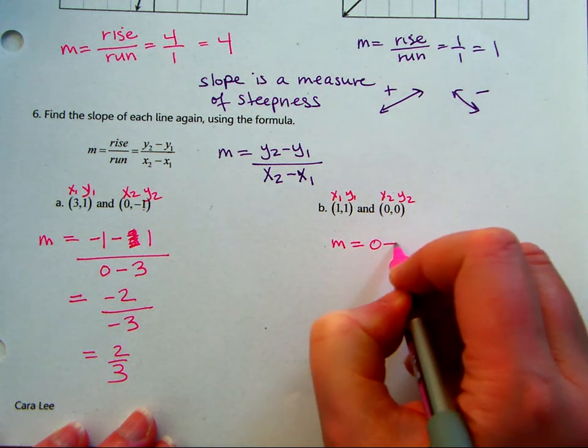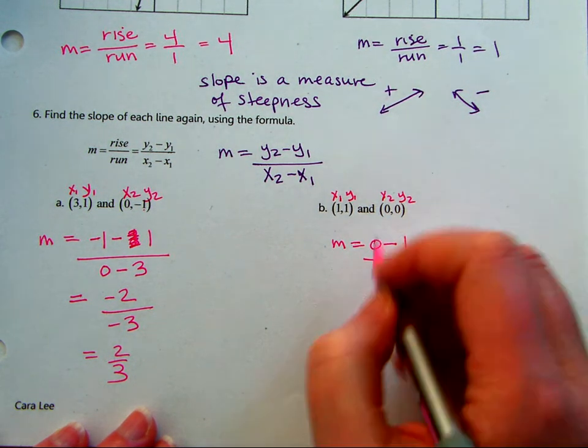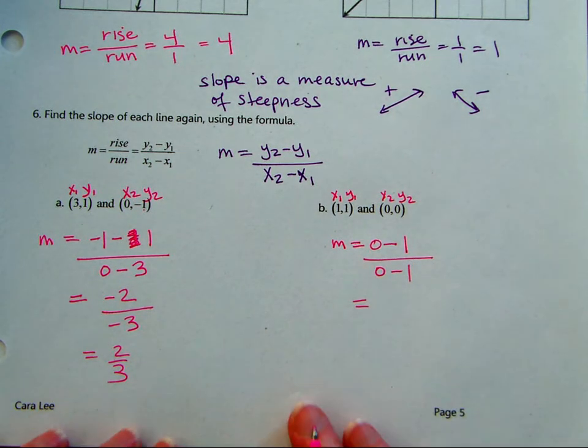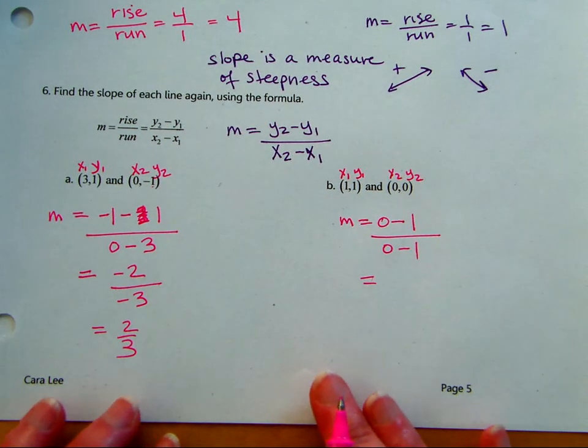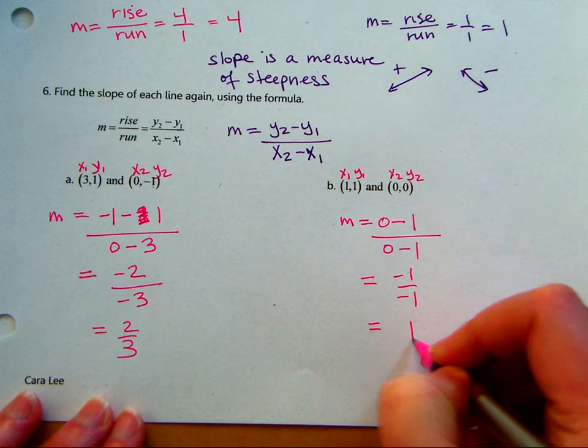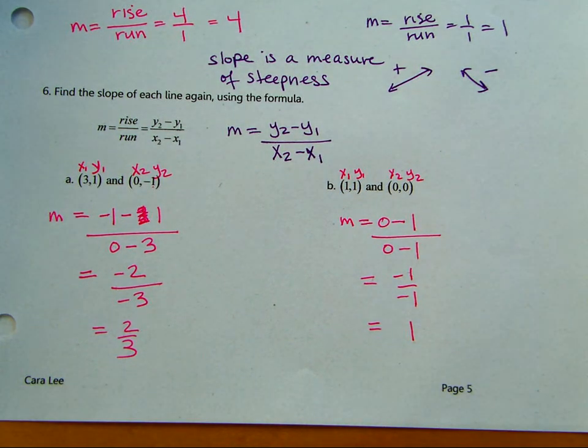So 0 minus 1 over 0 minus 1, which equals negative 1 over negative 1, which is 1. Now that is what we got. Those points match that graph.